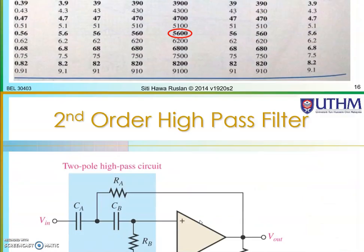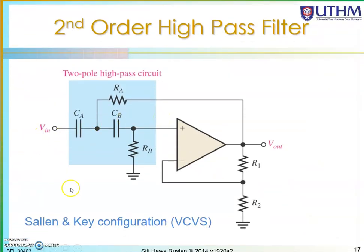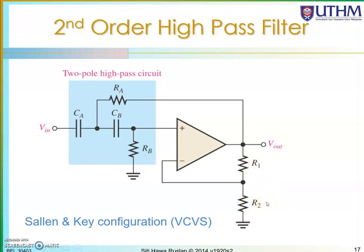The second order high pass filter is also called a Sallen-Key configuration — a voltage controlled voltage source where the output is controlled by the input signal. Another way to draw this circuit uses two RC pairs labeled Ra, Ca and Rb, Cb, where the ratio R1/R2 plays the same role as Rf/Ra previously. The components in the blue box determine the cutoff frequency. To design this you can use the Butterworth polynomial table. Thank you.